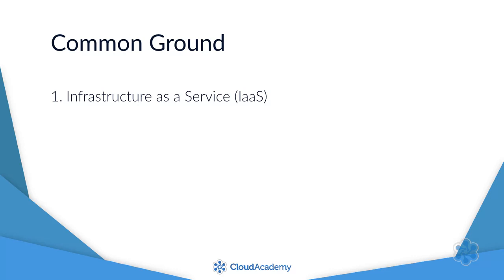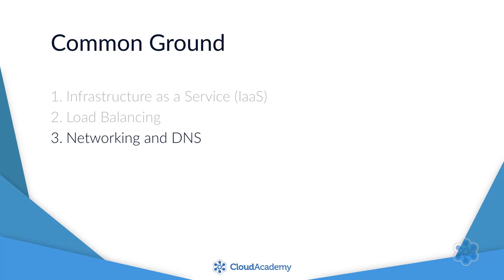Each platform provides Linux and Windows instances. Each also offers load balancers that distribute requests across groups of virtual machines that work with auto-scaling applications. You can also expect networking primitives for managing networking between machines, ingress and egress rules, and DNS.